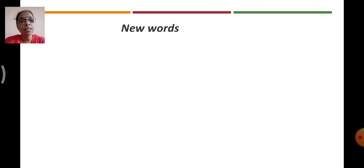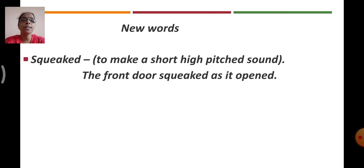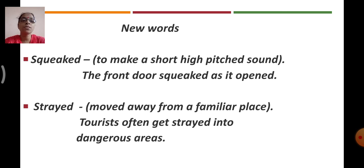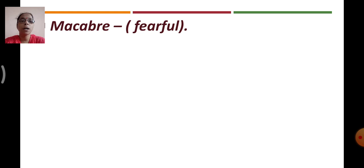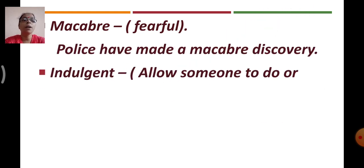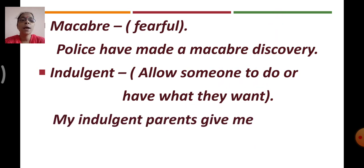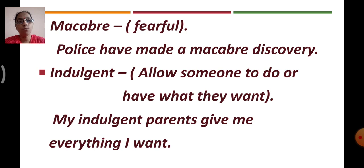Before we proceed, we will learn some new words. 'Squeaked' means to make a short high-pitched sound — for example, 'The front door squeaked as it opened.' 'Strayed' means moved away from a familiar place — 'Tourists often get strayed into dangerous areas.' 'Macabre' means fearful — 'Police have made a macabre discovery.' 'Indulgent' means to allow someone to do or have what they want — 'My indulgent parents give me everything I want.'